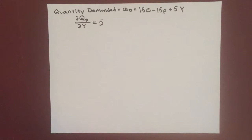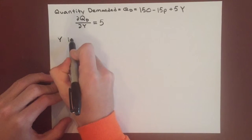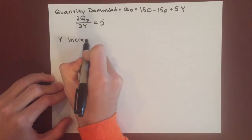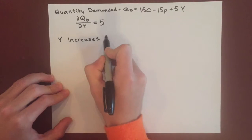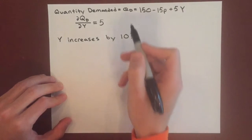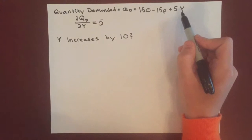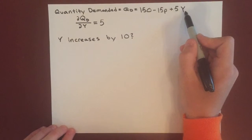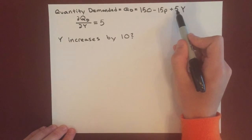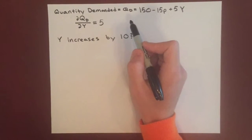We can also examine this and say, what if Y increases by a larger amount? So let's say, what if Y increases by 10? Now we're using the same quantity demanded, so you can look at this and say, if I increase Y by 10, 10 times 5 will be 50, and so quantity demanded will increase by 50.